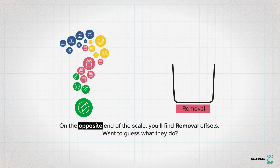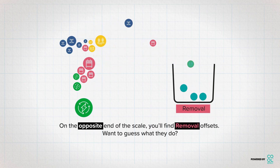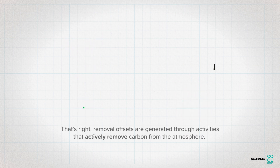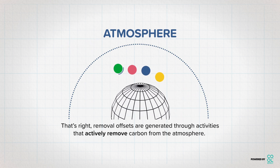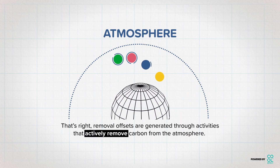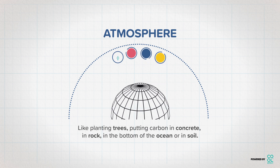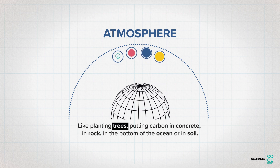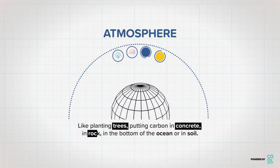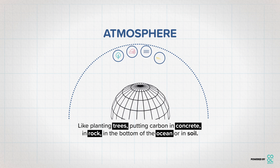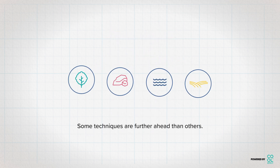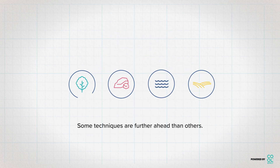On the opposite end of the scale, you'll find removal offsets. Want to guess what they do? That's right. Removal offsets are generated through activities that actively remove carbon from the atmosphere, like planting trees, putting carbon in concrete, in rock, in the bottom of the ocean, or in soil. Some techniques are further ahead than others.